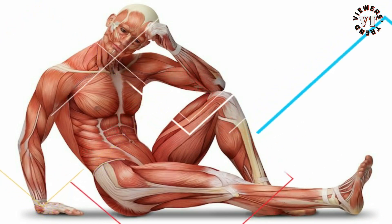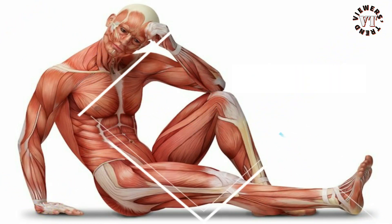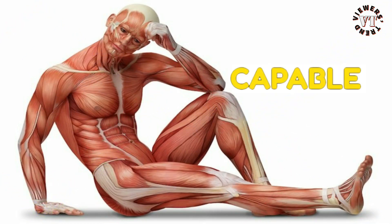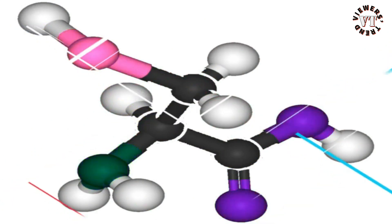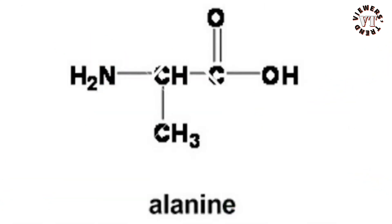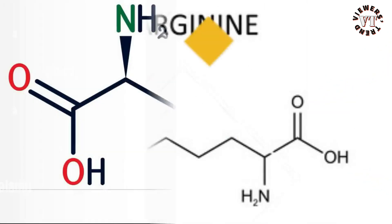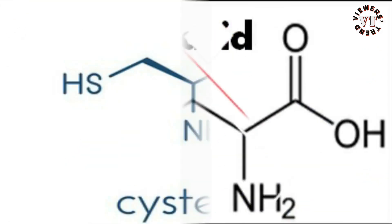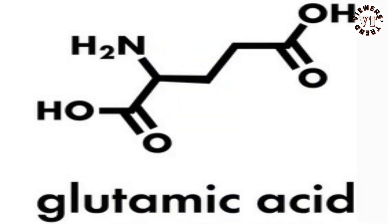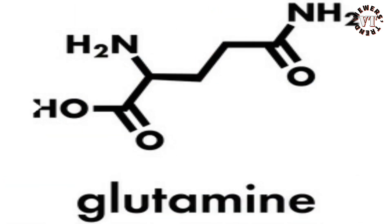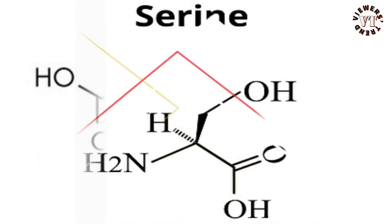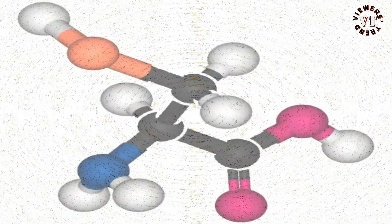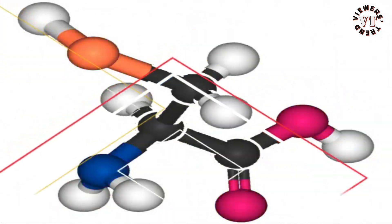Non-essential amino acids: the term non-essential refers to the fact that our bodies can make the amino acid, even if we don't obtain it from diet. Alanine, arginine, asparagine, aspartic acid, cysteine, glutamic acid, glutamine, glycine, proline, serine, and tyrosine are non-essential amino acids.